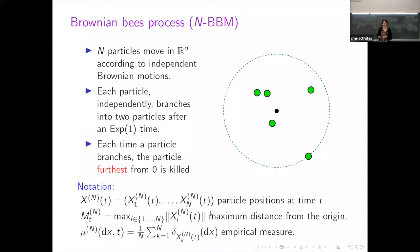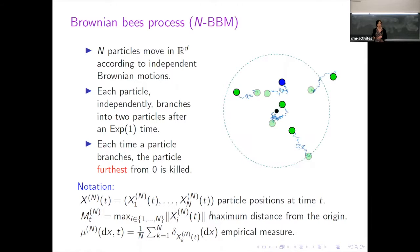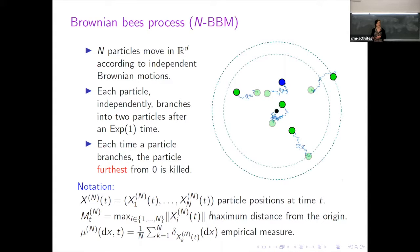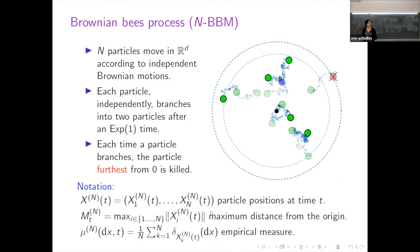In the pictures on the right, I'm showing what the process might look like for d equals two and N equals five. The black dot in the middle represents the origin. The particles move according to their independent Brownian motions until one of them decides to branch — say the blue particle. Then we see which particle is furthest from the origin — that one is killed — and the blue particle branches into two. All other particles continue moving, so we still have five particles in the system.